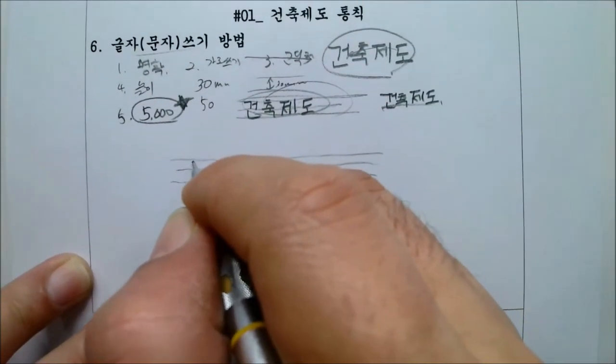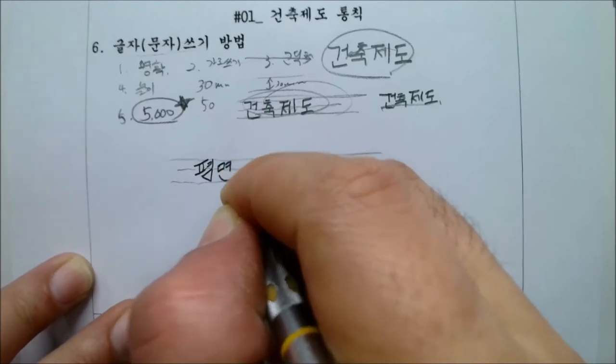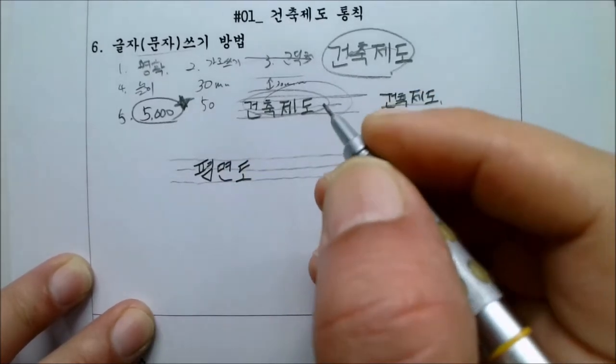여기에 글자를 쓸 때 어떻게? 평면도 그냥 편하게 지우세요. 선생님이 약간 이런 식으로 돌립니다. 이해하시겠나요?